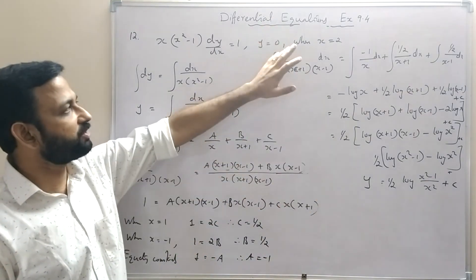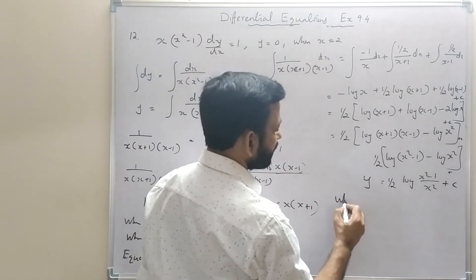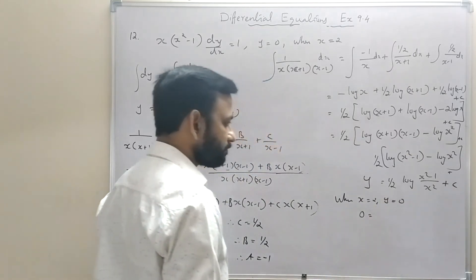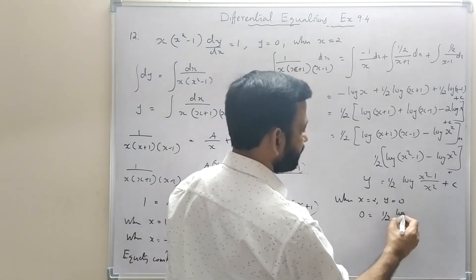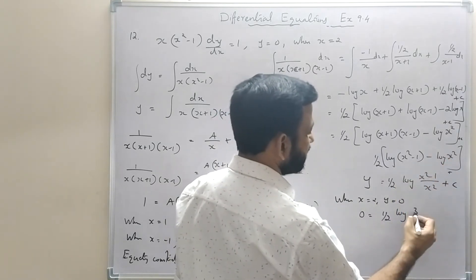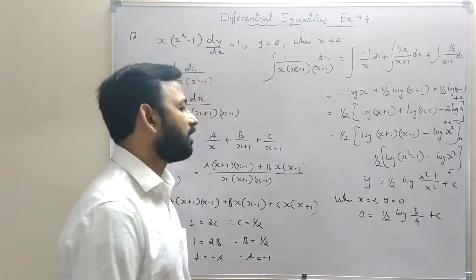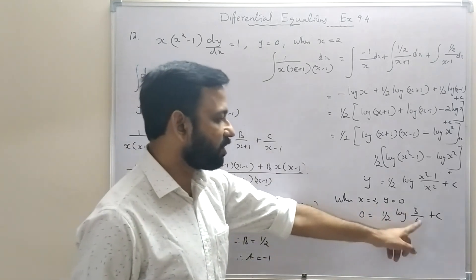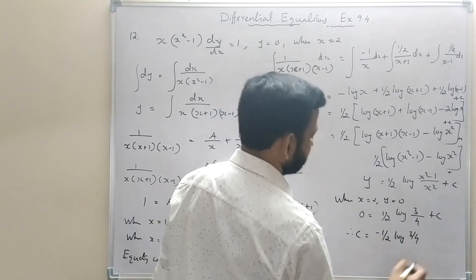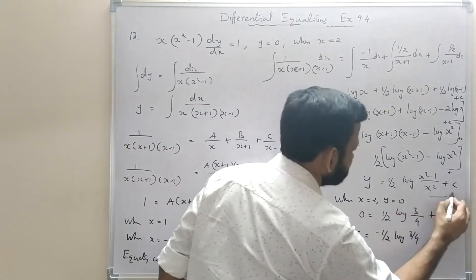To find the particular solution, substitute x = 2, y = 0: 0 = (1/2)log(3/4) + c, so c = -(1/2)log(3/4). The particular solution is y = (1/2)log|(x² - 1)/x²| - (1/2)log(3/4).